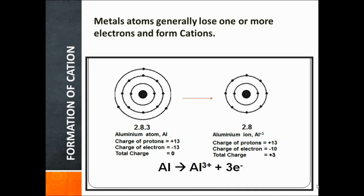The new configuration is 2 and 8 — K shell having 2 and L shell having 8. The equation: aluminium loses 3 electrons and forms the aluminium cation Al³⁺. It becomes +3 charge because the difference between positive and negative charges is: 13 protons (+13) minus 10 electrons (−10) equals +3 charge.